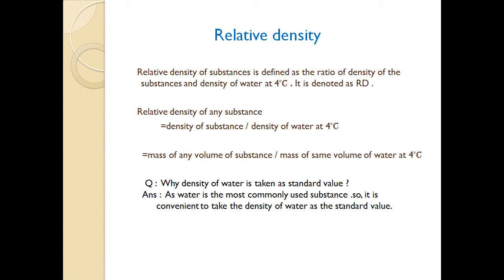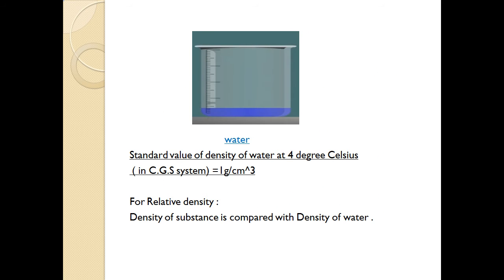Now the question arises: why is the density of water taken as the standard value? Since water is the most commonly used substance. The standard value of density of water at 4 degrees Celsius in CGS system is 1 gram per centimeter cube. For relative density, the density of substance is always compared with this density of water.